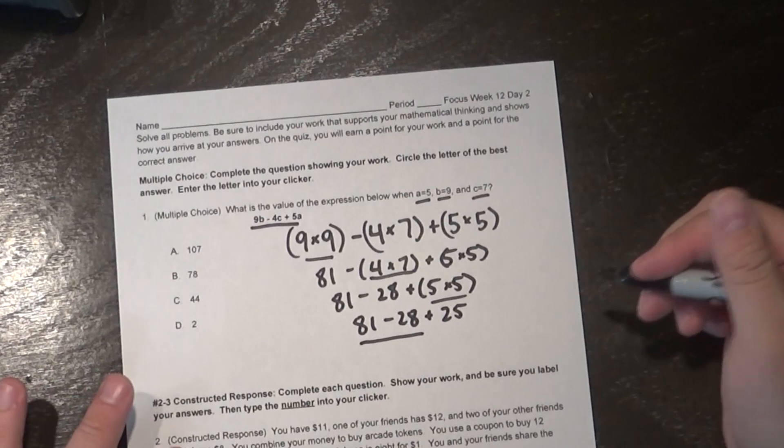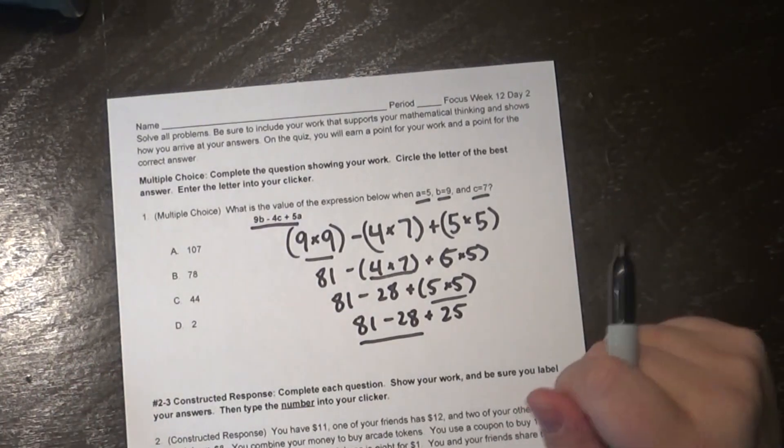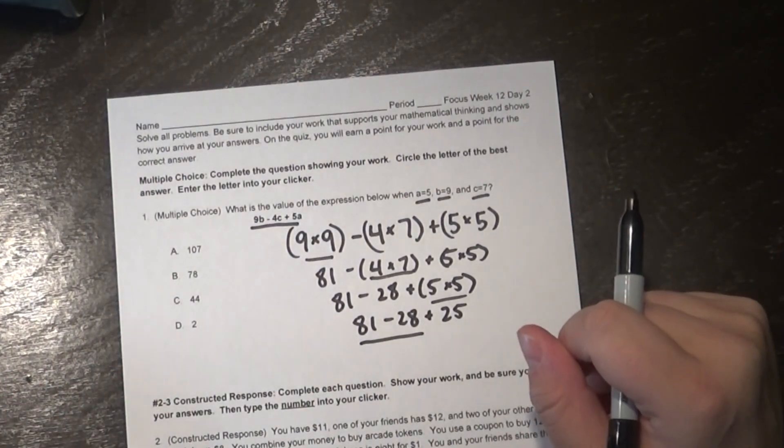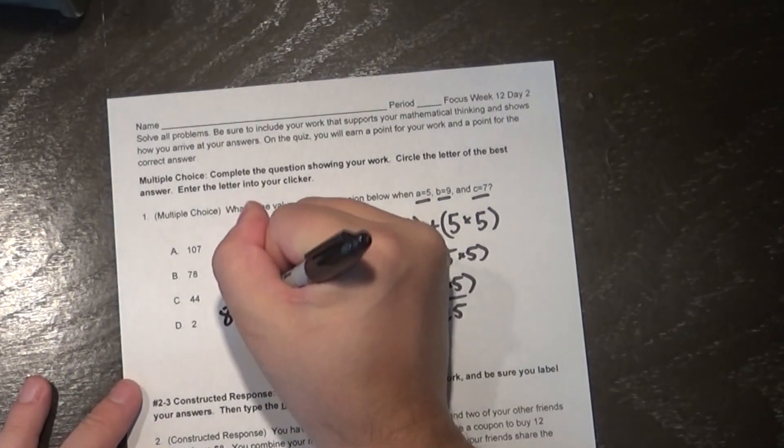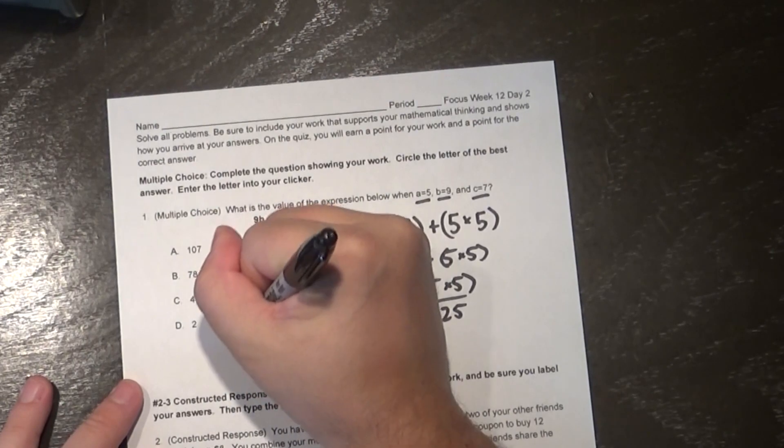So 81 minus 28. I'm not sure what that is off the top of my head, but I have this special power. Special ability. And it's not just me, you have it too. And that's the ability to do math off to the side. So check me out over here.